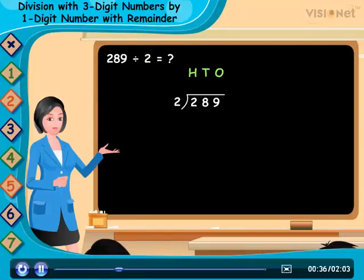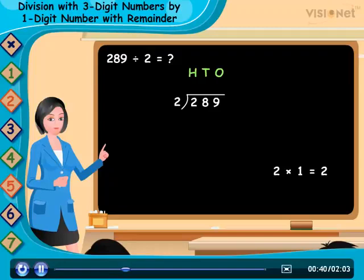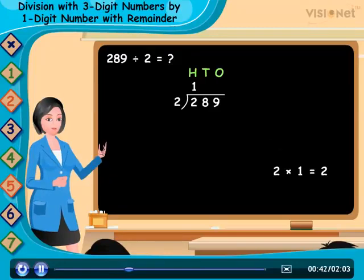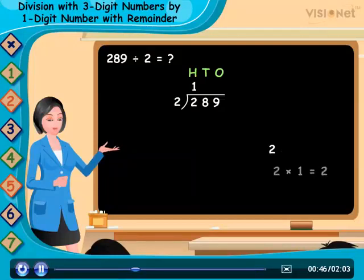As we know, 2 into 1 is equal to 2. So, we write 1 in the hundreds place of quotient and write 2 below 2.